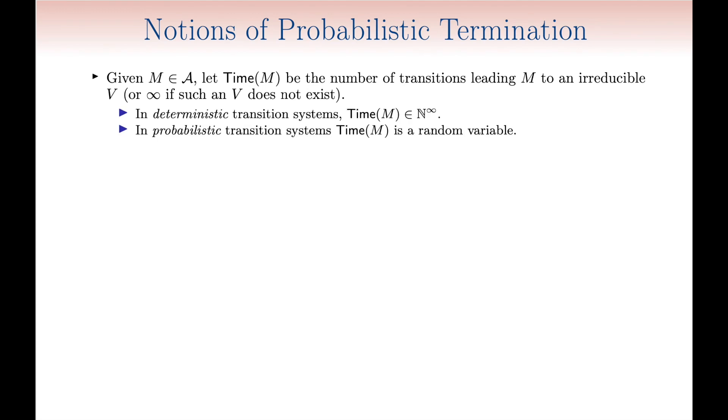Well, time m is a natural number or infinity in deterministic transition systems. It however becomes a random variable in probabilistic transition systems, because its value depends on the outcomes of the performed probabilistic choices. Of course, we are interested in the event corresponding to the random variable time m having a finite value here.